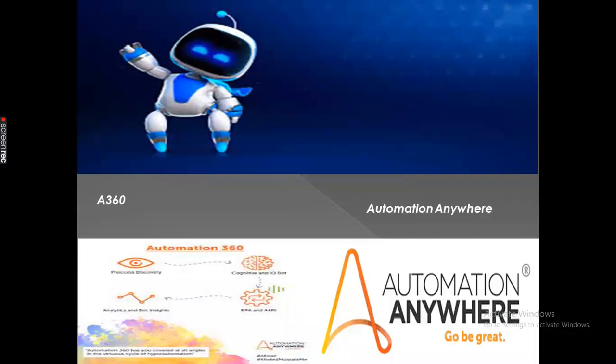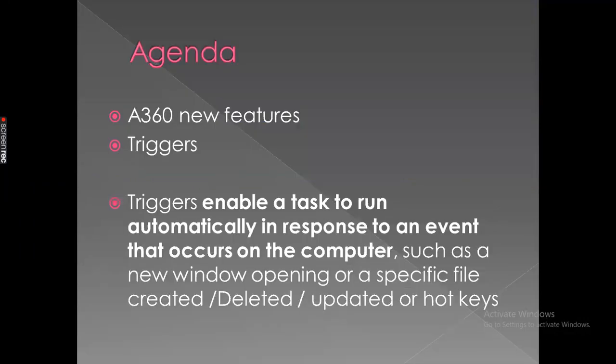In today's session we are going to learn triggers concepts. In the previous session we already covered file triggers, so in this session we are going to cover folder triggers with the help of an example. A trigger is nothing but an event — it enables a task to run automatically in response to an event that occurs on your local computer system, such as when a window is opened or closed, a file is updated, a folder is updated, a file is deleted or renamed, a folder is deleted or renamed, a process is running, or a specific hotkey like Control+S, Control+V, or Control+Shift+L is pressed. Based on those triggers we can run specific tasks or commands.